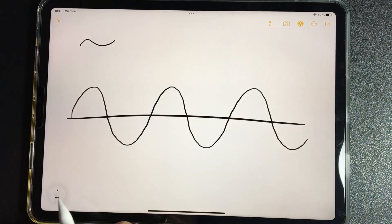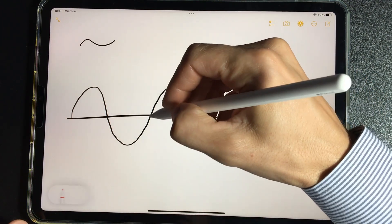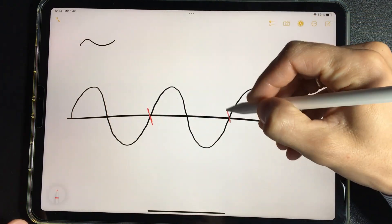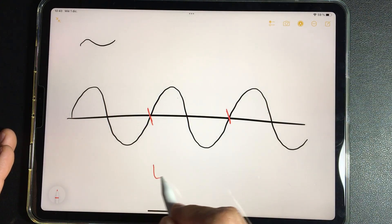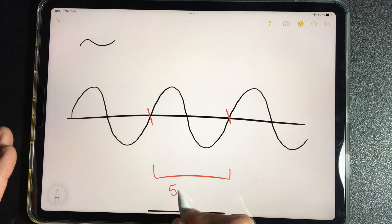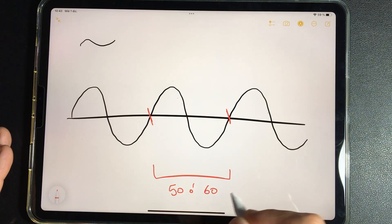And this happens, we're going to mark it with another color, between this point and this one. This happens 50 or 60 times per second, which is the frequency.